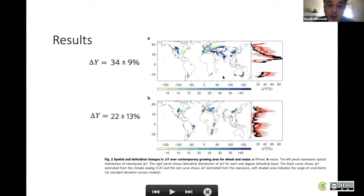If we calculate the average across the world of all these yield gaps, we got something like 34% for wheat and 22% for maize. There is a big uncertainty, as you can see from the confidence interval.